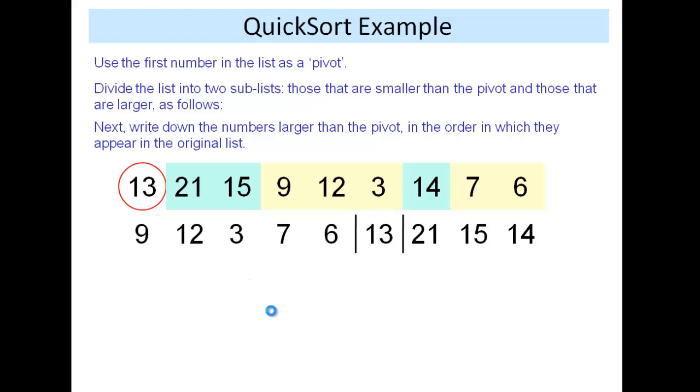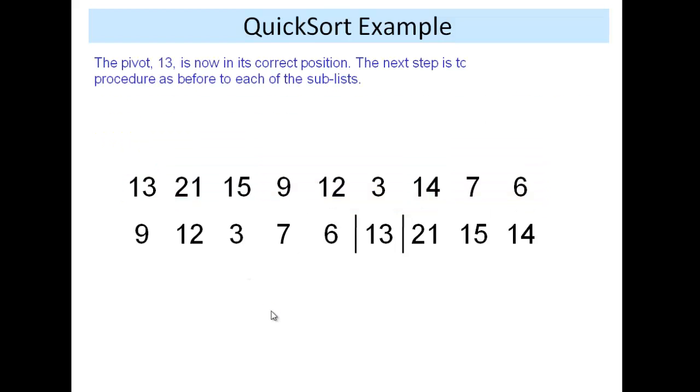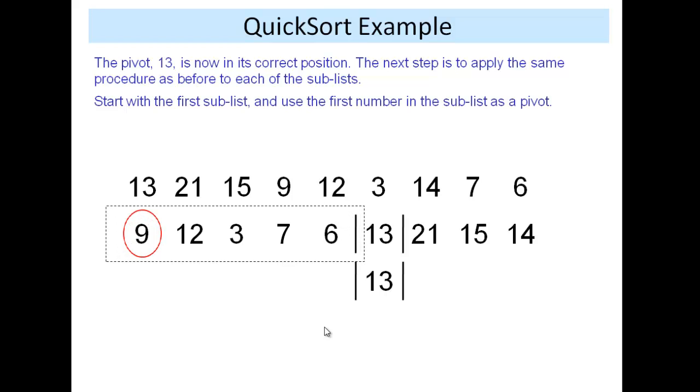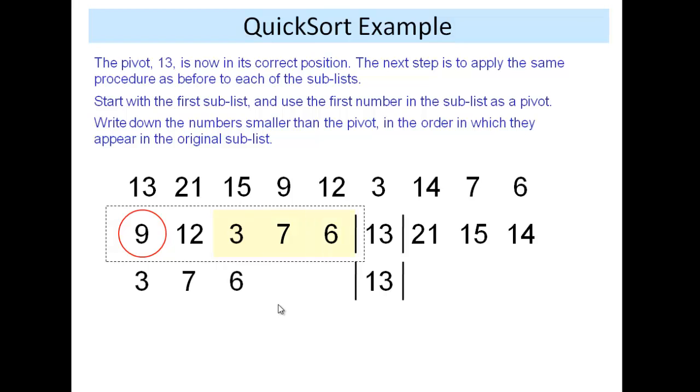We now look at the two sub-lists, and we apply the same procedure. So we use nine as a pivot for this first sub-list, the numbers to the left of the pivot from the first pass. We write down the numbers that are smaller than or equal to it, 3, 7 and 6. Then write down the pivot.